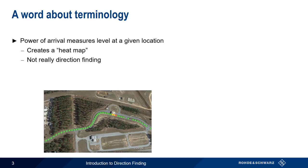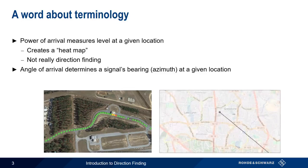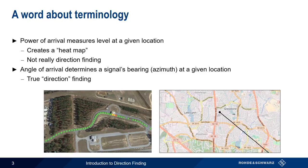On the other hand, we can define angle of arrival as any methodology that determines the angle towards the source. This is true direction finding in that we calculate the direction from which the signal is arriving. The vast majority of direction finding methodologies are based on angle of arrival, because this approach is faster, more efficient, and much more accurate than approaches based on power of arrival.